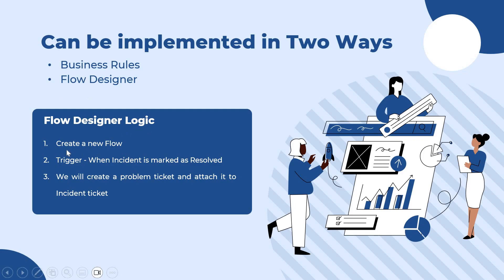The logic is: we will create a flow where the trigger condition is when a P1 incident is marked as resolved. Then we will create a problem ticket and attach it to the incident record. Let's go ahead and implement this in ServiceNow.